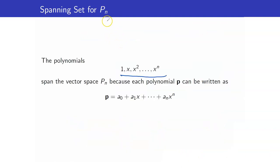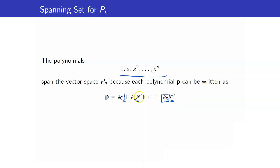Another example: let's look at a spanning set for Pn. Recall that Pn is the set of polynomials of degree less than or equal to n. The vectors in Pn are simply polynomials. These span the vector space Pn because if we get an arbitrary polynomial, it is written as A0 plus A1·x plus ... plus An·xⁿ, and this is exactly a linear combination of the vectors 1, x, ..., xⁿ with scalars A0, A1, ..., An.